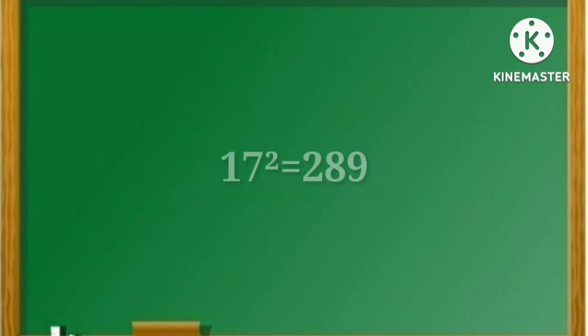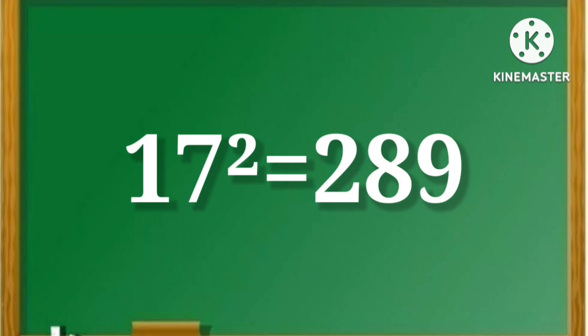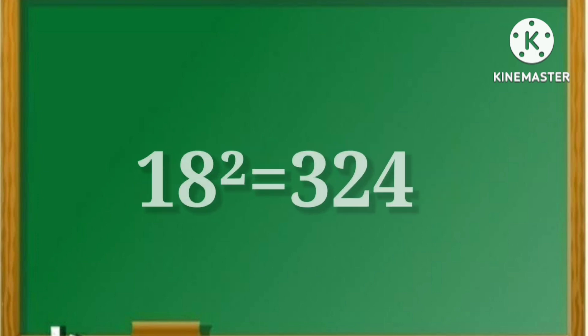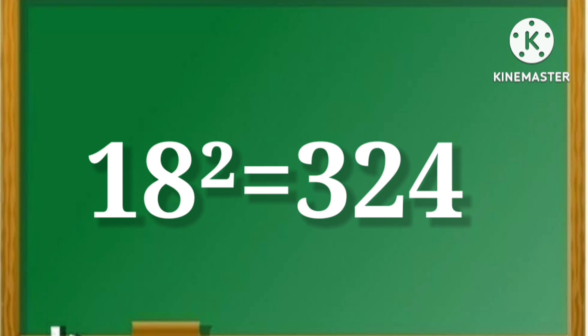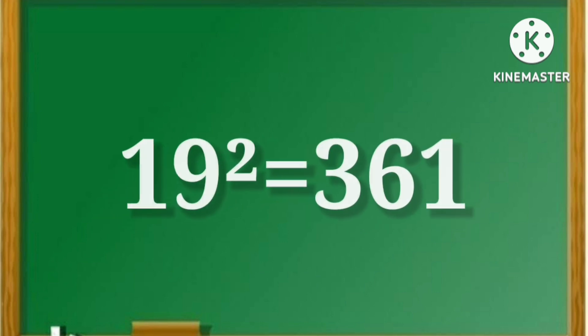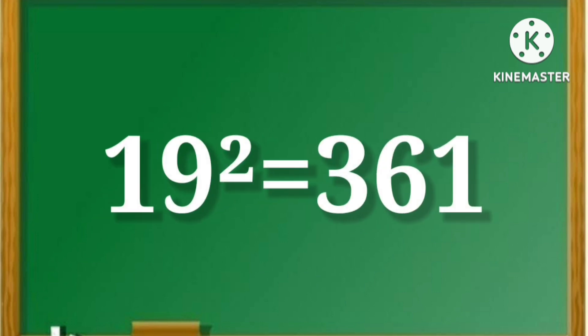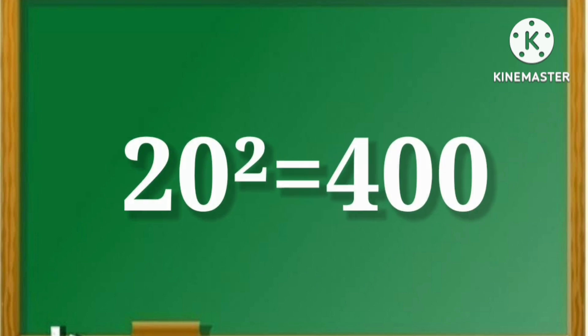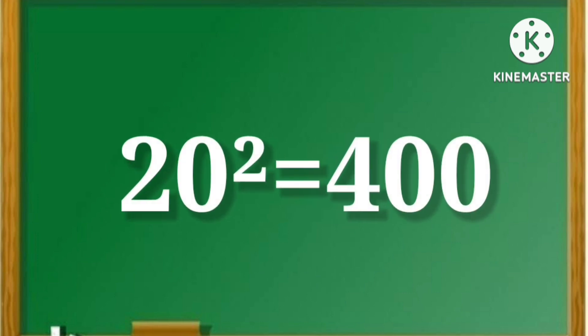17 squared is equal to 289. 18 squared is equal to 324. 19 squared is equal to 361. 20 squared is equal to 400.